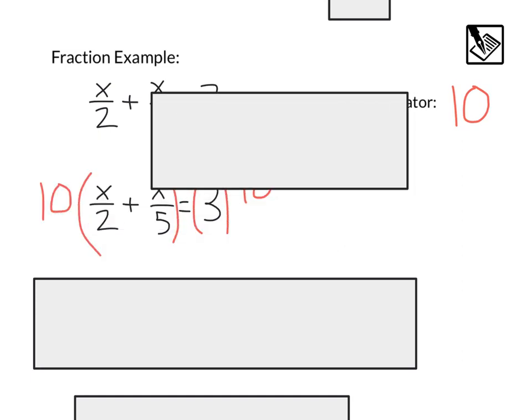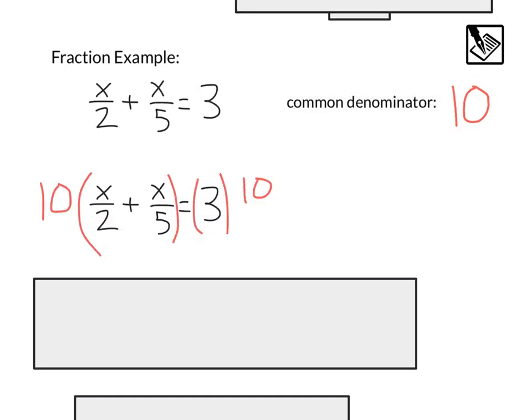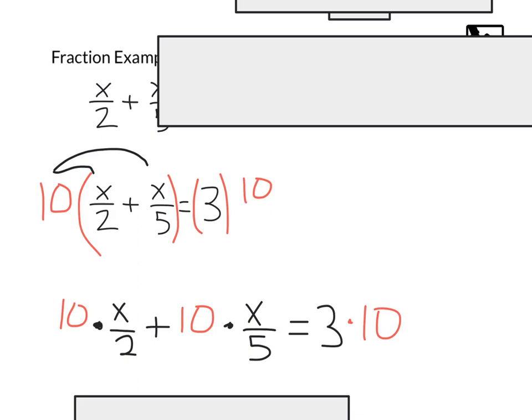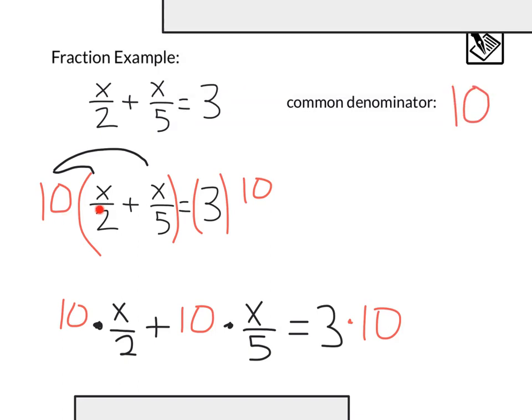we can actually multiply both sides of the equation. So we multiply the left by 10, multiply the right by 10, and this 10 is actually going to distribute in on the left because it multiplies the whole side. And that's going to give us 10 times this term x over 2, 10 times this term x over 5, and on the other side we have that 10 times 3.